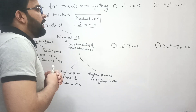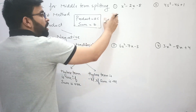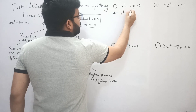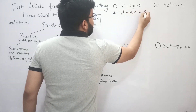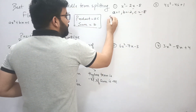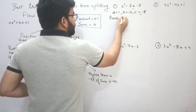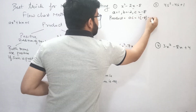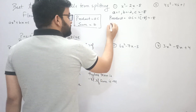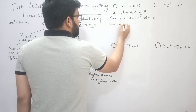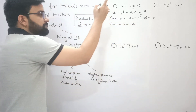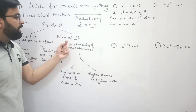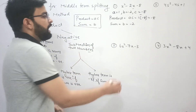Question 1: x² - 2x - 8. Here a = 1, b = -2, c = -8. The required product is a×c = 1×(-8) = -8, and the required sum is b = -2. Since the product is negative, we have to subtract two numbers.